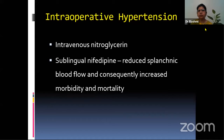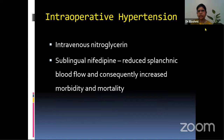To treat intraoperative hypertension, intravenous nitroglycerin is the drug routinely used. Sublingual nifedipine should not be used because it reduces splanchnic blood flow and consequently increases morbidity and mortality. If the patient is preoperatively on ARBs — angiotensin receptor blockers — then they may be stopped, because they can lead to hypotension at the time of induction and perioperatively.